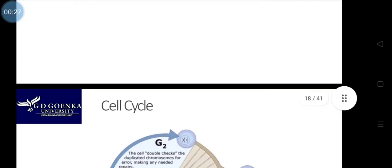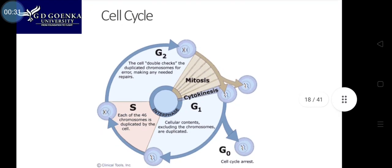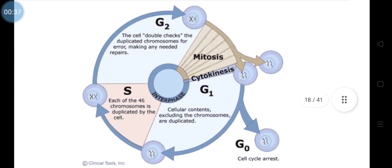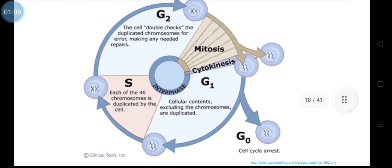First, we will know about the cell cycle in brief. This is the cell cycle showing different phases of the cell. We can start from mitosis — mitosis is a kind of cell division. After mitosis, one parent cell is divided into two daughter cells.